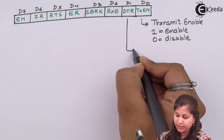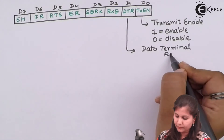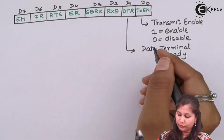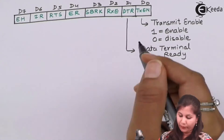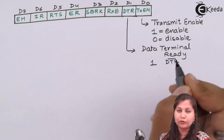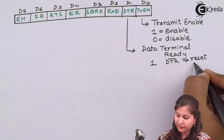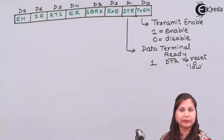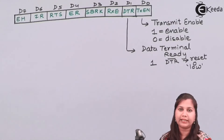Then we have DTR which is the Data Terminal Ready. This DTR is also a pin available on the 8251 IC, and through this command instruction we can set this DTR pin high or low. Because DTR pin is an active low signal, when this bit is 1 the DTR pin will be reset or low, meaning DTR signal will be activated. When it is 0, the DTR signal will be deactivated.